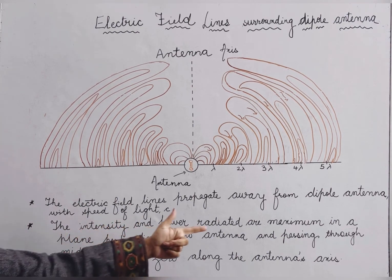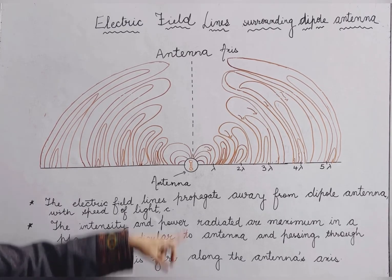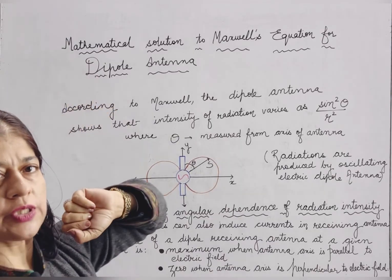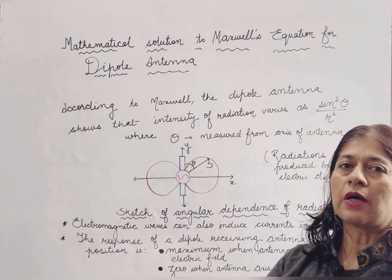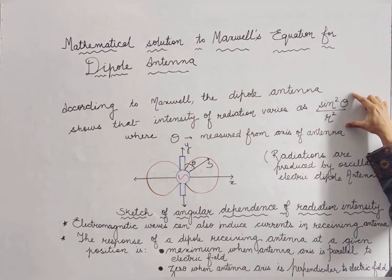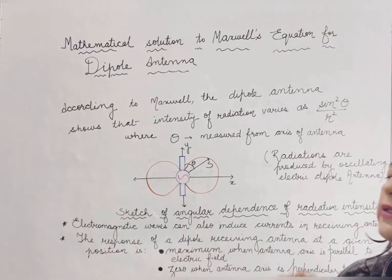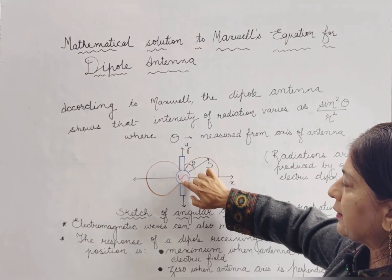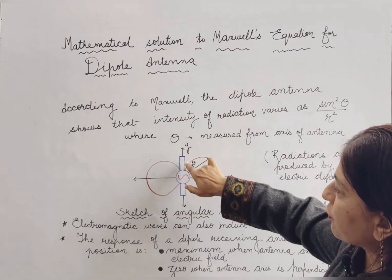These are the conclusions: the intensity and power radiated are maximum in the plane perpendicular to the antenna and passing through the midpoint, and power radiated is zero along the antenna axis. Now, we have the mathematical solution to Maxwell's equation for the dipole antenna. According to Maxwell, whatever radiations are produced by the dipole antenna, their intensity varies according to the relation sin²θ / r², where the angle θ is measured from the axis of the antenna.